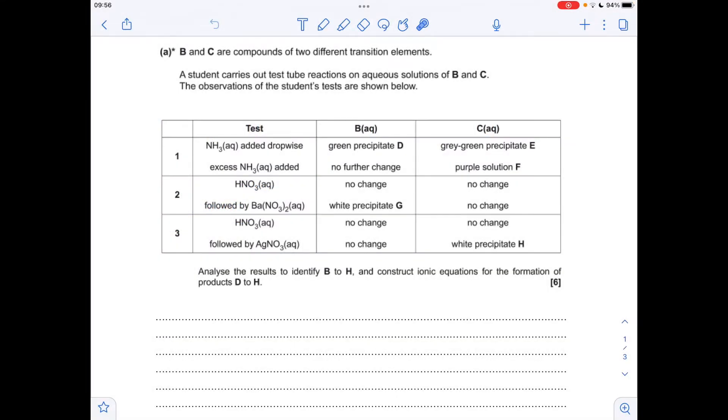So making a start, you can see in test one they're adding aqueous ammonia dropwise and then in excess. Initially you're going to get hydroxide precipitate and they've both got a green color, so we're talking about iron(II) hydroxide and chromium(III) hydroxide.